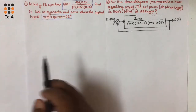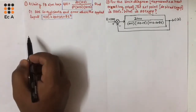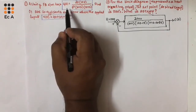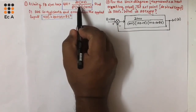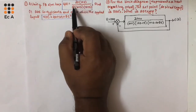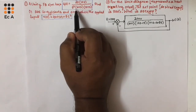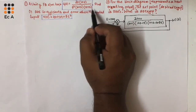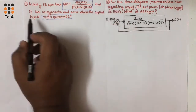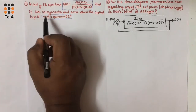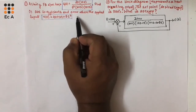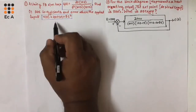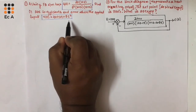Today we will solve two problems. The first problem is: a unity feedback system has G(S) equal to 20 times (1 plus S) divided by S squared times (2 plus S) times (4 plus S). For this G(S), we need to find its steady state error coefficients and the error when the applied input is R(T) equal to 40 plus 2T plus 5T squared.